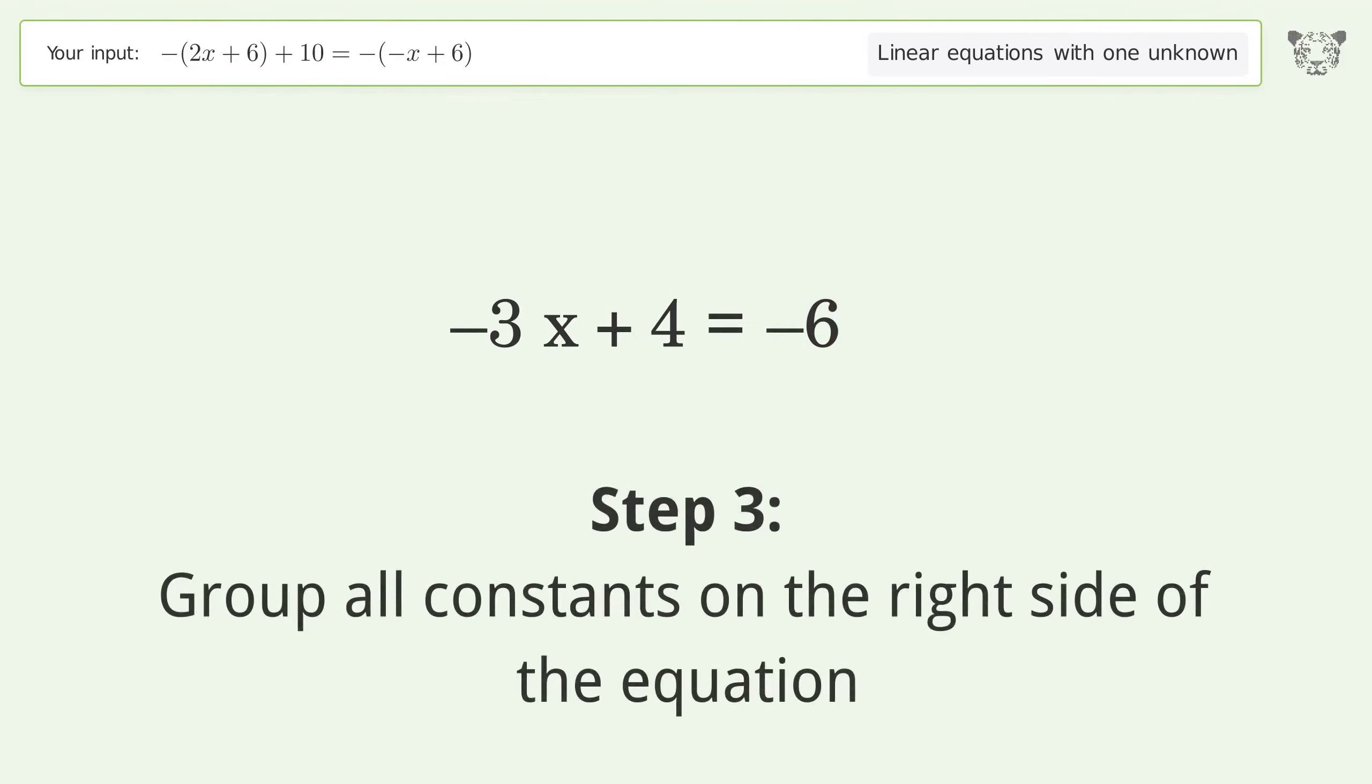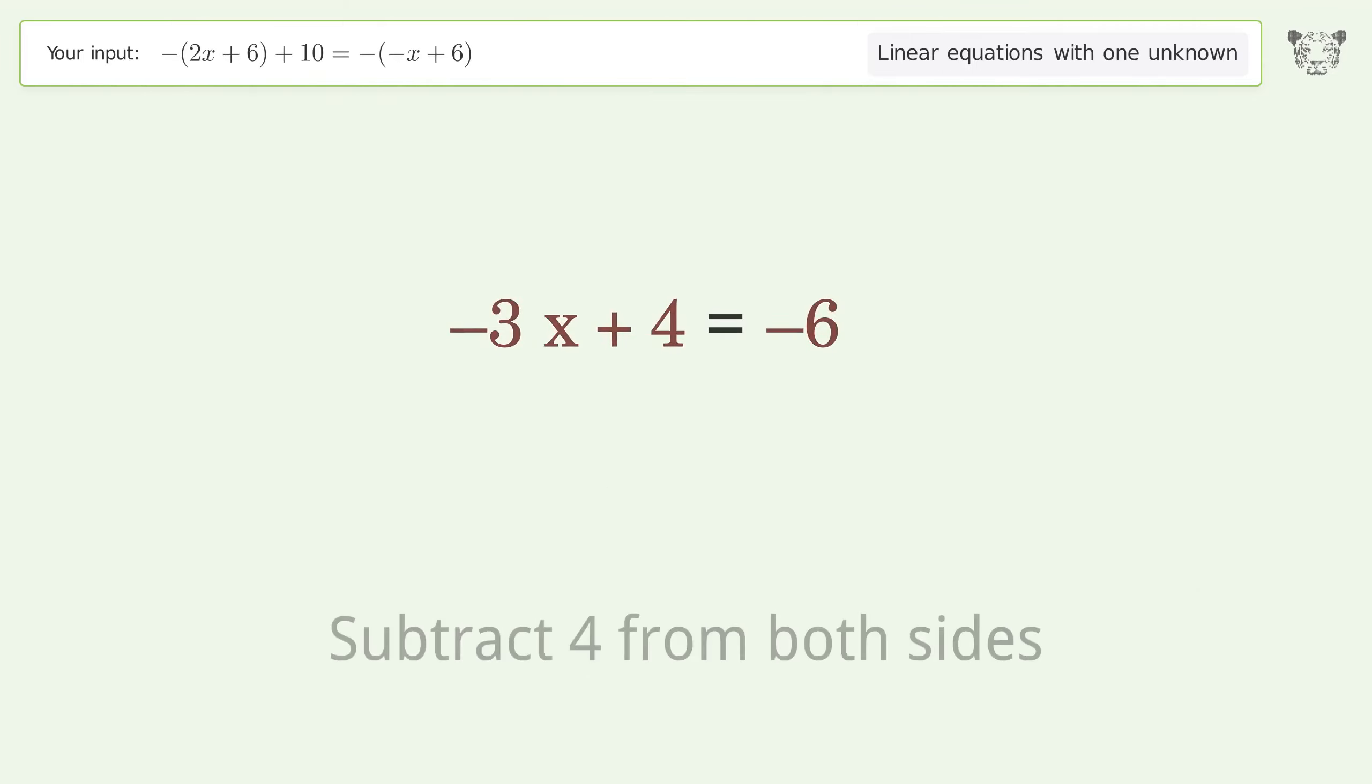Group all constants on the right side of the equation. Subtract 4 from both sides. Simplify the arithmetic.